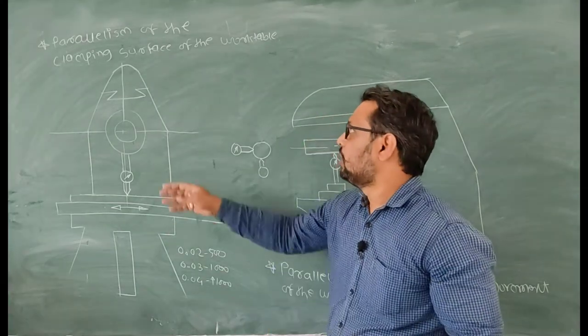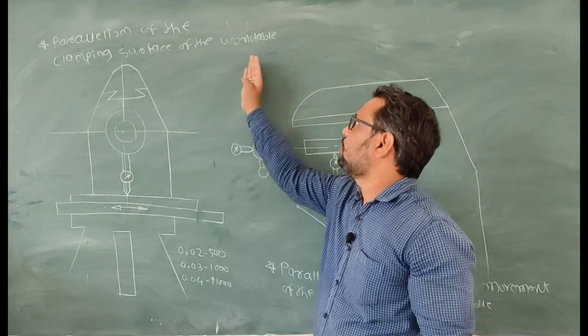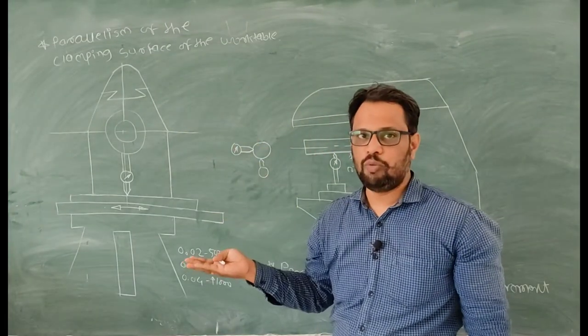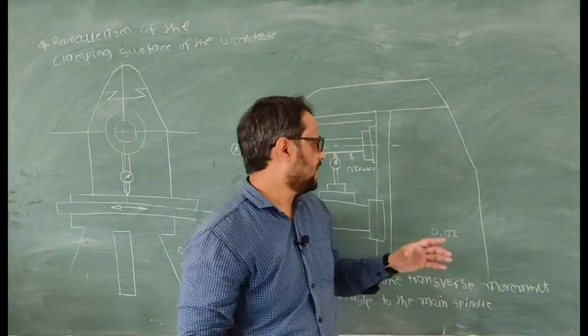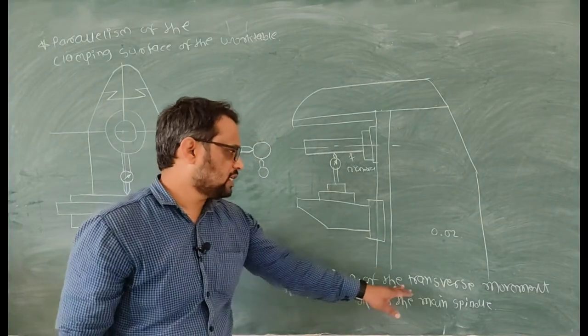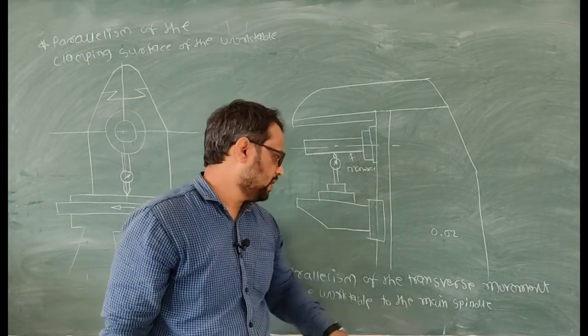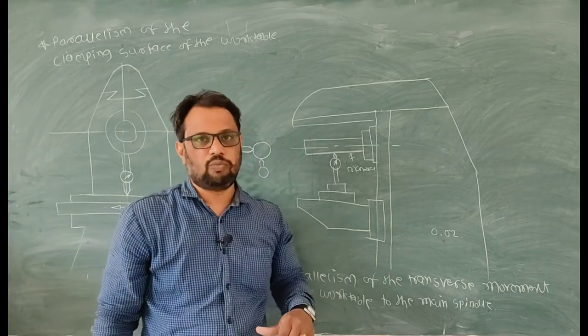So first is the case of parallelism of the clamping surface of the work table in longitudinal movement, and second case is parallelism of the transverse movement of the work table to the main spindle in transverse movement.